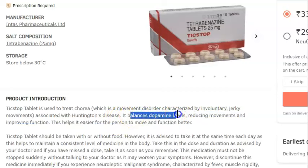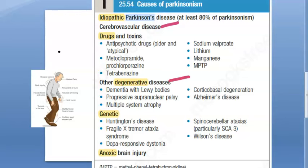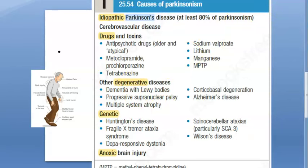In summary, the causes of parkinsonism are: idiopathic Parkinson's disease (80%), drugs and toxins, cerebrovascular disease, degenerative diseases, genetic causes like Wilson's disease — where removing excess copper may help — and anoxic brain injury. For degenerative causes, keeping nerves healthy through proper nutrition may help. Genetic causes, unfortunately, cannot be changed.